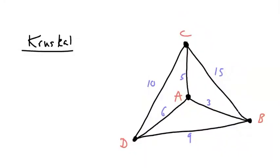Okay, the first step here is to count the number of vertices. We have ABCD, so we have four vertices, and that means I have to find three edges. So I want three lengths to complete the graph. Simple rule is start with the least weighted edge.